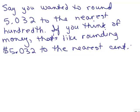Let's say you wanted to round this number. It says 5.032, but remember how we read that: 5.032 to the nearest hundredth. Right now it's going all the way to the thousandth place. What we want to do is round it to the nearest hundredth. If you think of money, this is like rounding $5.032 to the nearest cent. So the choice is go up a penny more or just keep it at 5.03.